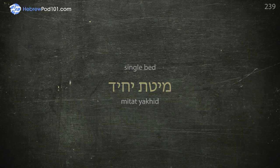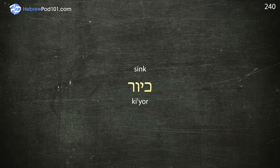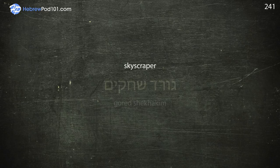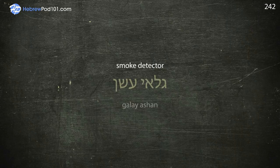Skyscraper — Goreed Shakim. Smoke detector — Galay Ashan. Soap — Sabon.